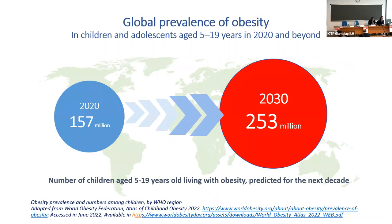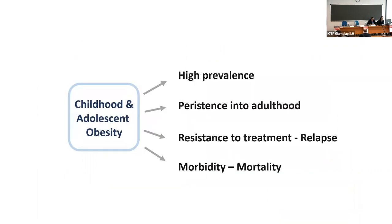But what about children and adolescents? We heard before that the global prevalence of obesity is dramatically increasing, and that in 10 years we will have more than 250 million overweight and obese children and adolescents. Therefore, it is a big problem.